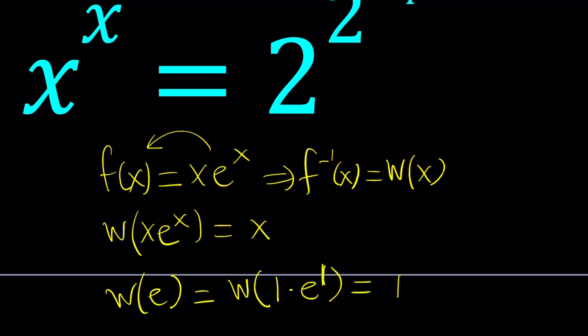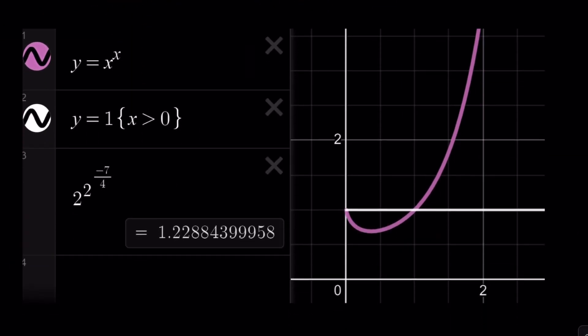One of the questions that come up all the time is how many solutions are we going to get if x to the power x equals a constant. Let's go ahead and take a look at the graph of x to the power x. It is a function that decreases between 0 and 1 and then increasing 1 to infinity.